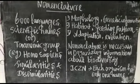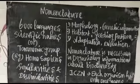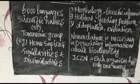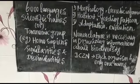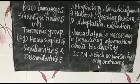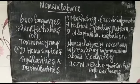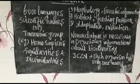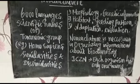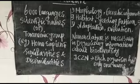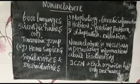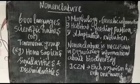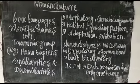Nomenclature is divided into binomial nomenclature and trinomial nomenclature. In binomial nomenclature, for example, Homo sapiens: 'Homo' is the genus name and 'sapiens' is the species name. In trinomial nomenclature, such as Corvus splendens splendens, there is a genus name, species name, and subspecies name. In the next video, we will see the differences between binomial and trinomial nomenclature. Thank you.